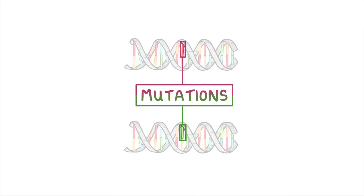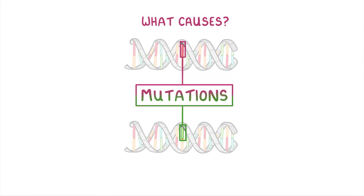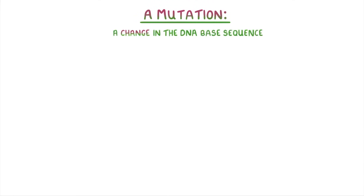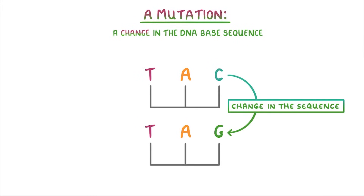Today's video is all about mutations. We'll cover what causes mutations and what some of their consequences can be. All we mean by mutation is a change in the DNA base sequence — a change in the sequence of letters that make up our DNA code, like in this example here where this C has been changed to a G.